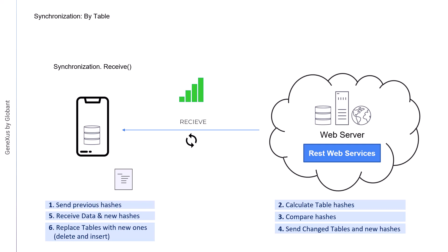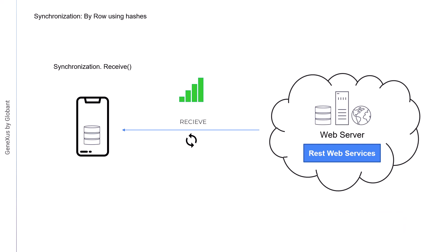As a special case, in the first synchronization, there's no data in the local database. So all the data of all the tables that comply with the filters in the offline database object, and the hashes of each one, are sent. Synchronization by row, using hashes, only sends to the device those records that were changed since the last synchronization, using the calculation of hashes to determine the updates. The advantage is that less data is transmitted between the device and the server, since it only involves modified records.